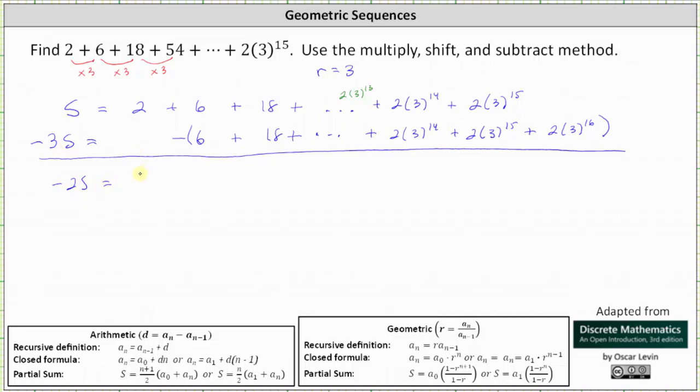So the 2 comes down. And then notice when we start subtracting, 6 minus 6 is 0, 18 minus 18 is 0, 2 times 3 the 14th minus itself is 0, 2 times 3 the 15th minus 2 times 3 the 15th is 0.